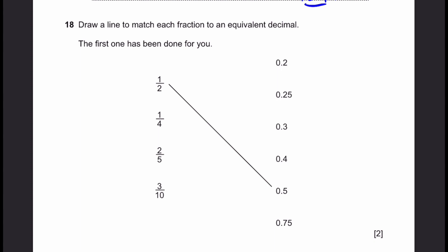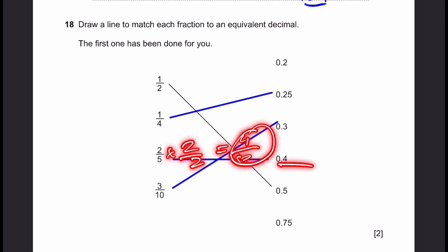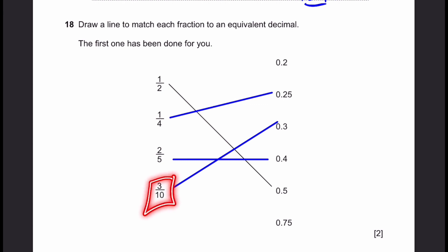Question 18. Draw a line to match each fraction with an equivalent decimal. 1/4 is equal to 0.25. 2/5 is equal to 0.4. And 3/10 is 0.3. To explain how I match these, 1/4, if we multiply both sides by 25, we get 25/100, which converts to 0.25. For 2/5, we multiply both sides by 2 to get 4/10, which is 0.4. For 3/10, it's already in the form of a numerator divided by a power of 10, so 3/10 is easily written as 0.3.